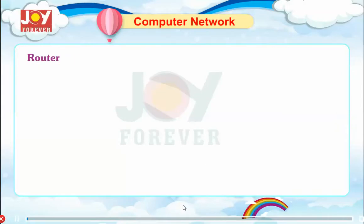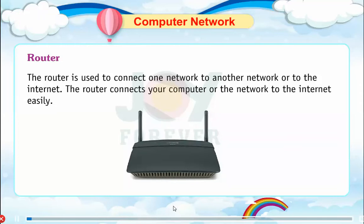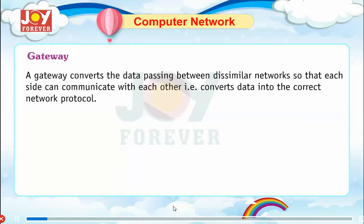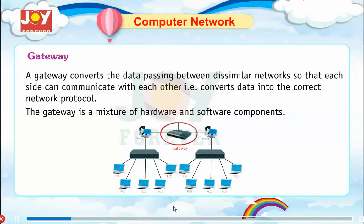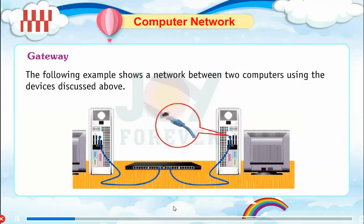Router: the router is used to connect one network to another network or to the internet. It connects your computer or network to the internet easily. Gateway: a gateway converts the data passing between dissimilar networks so that each site can communicate with each other, i.e., it converts data into the correct network protocol. The gateway is a mixture of hardware and software components.